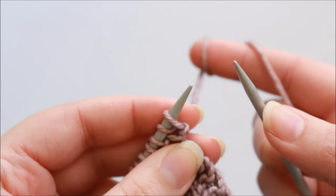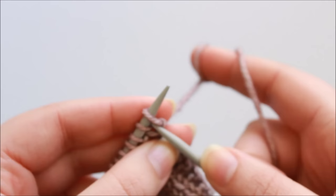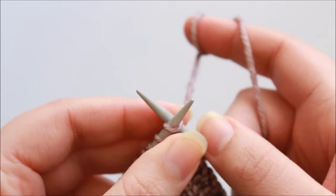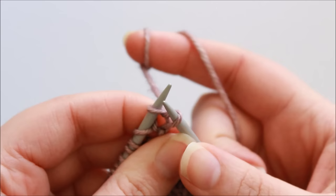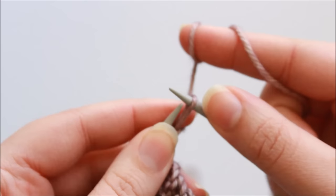That's cast on one stitch. I need to cast on two, so I repeat that again. So I knit into the first stitch, which is actually now the stitch that we just cast on, so knit into it but don't slip it from the left hand needle, put this loop that's on the right hand needle onto the left hand needle, and then we've cast on two stitches.